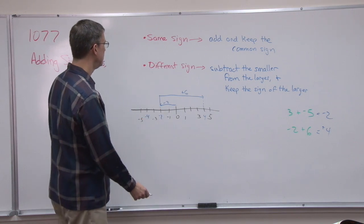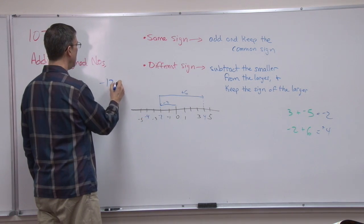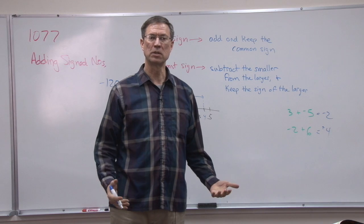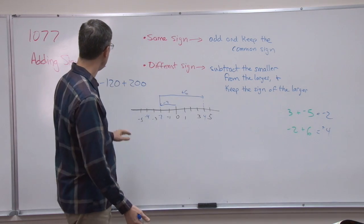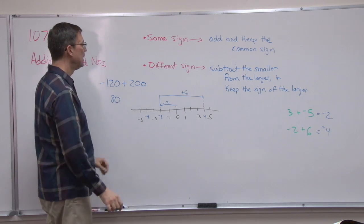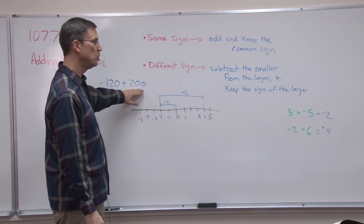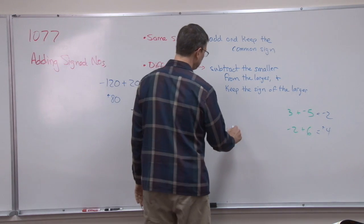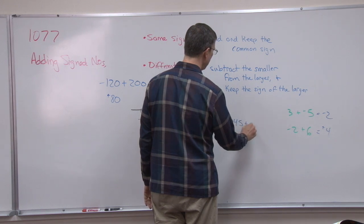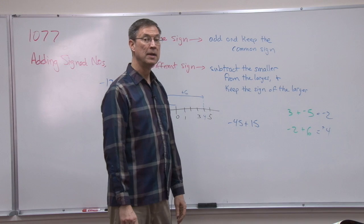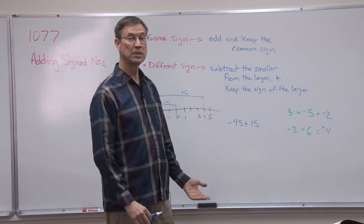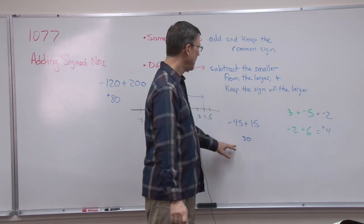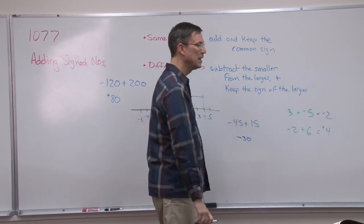We can illustrate this with big numbers. Negative 120 plus positive 200: subtract the smaller from the larger — 200 minus 120 gives 80. Keep the sign of the larger — 200 was larger and positive, so the answer is positive 80. Let's do one more: negative 45 plus positive 15. Subtract 15 from 45 to get 30, then keep the sign of the larger, which was negative 45, so the answer is negative 30.